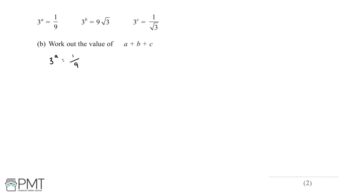9 is equal to 3 squared, so 1 over 9 is equal to 1 over 3 squared. And 1 over 3 squared will be equal to 3 to the power of negative 2. So if 3 to the power of a is equal to 3 to the power of negative 2, then a is equal to negative 2.